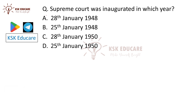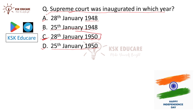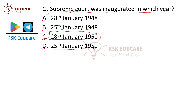The last question is: The Supreme Court was inaugurated in which year? Option A is 28 January 1948, Option B is 25 January 1948, Option C is 28 January 1950, and Option D is 25 January 1950. The correct answer is Option C: the Supreme Court was inaugurated on 28 January 1950.